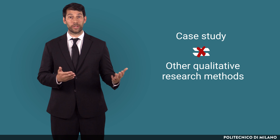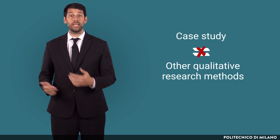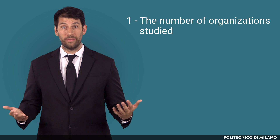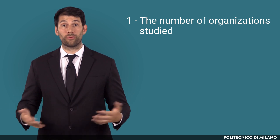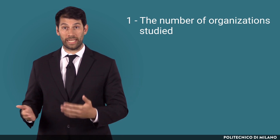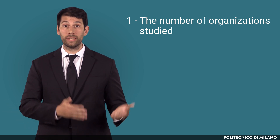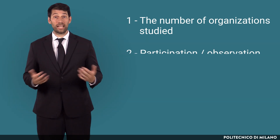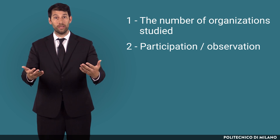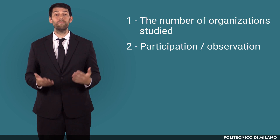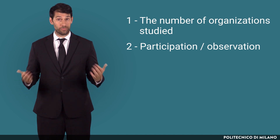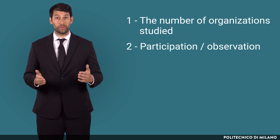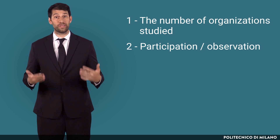Case study research differs from other qualitative research methods, like qualitative surveys or action research methods, in terms of several aspects. First, the number of organizations studied, which can span from 1 to 100 or even more. A case study typically includes 1 to 10 different entities analyzed, depending on whether the case is single or multiple. Second, the researcher's position towards the subject of study — whether it involves participating in changing events or mere observation. Case studies, contrarily to action research, imply an observing role for the researcher, without direct intervention, which may modify the setting investigated.